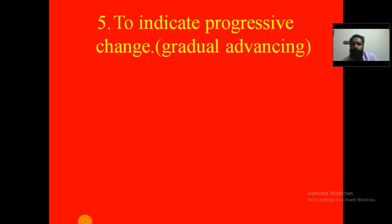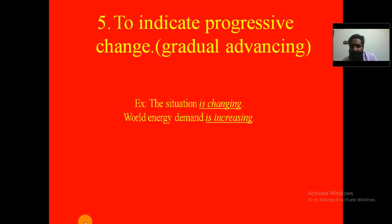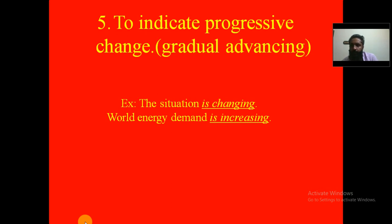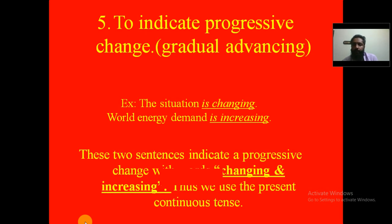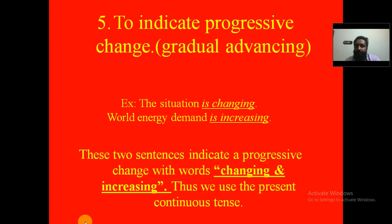We use the present continuous tense to indicate progressive change, meaning gradual advancing or slow improvement. Examples: 'The situation is changing' and 'World energy demand is increasing.' The words 'changing' and 'increasing' indicate progressive change, so we use the present continuous tense.